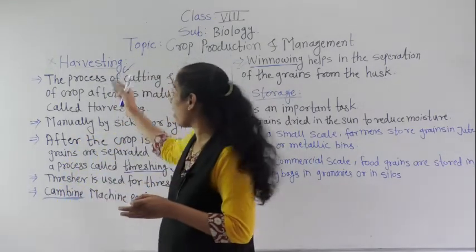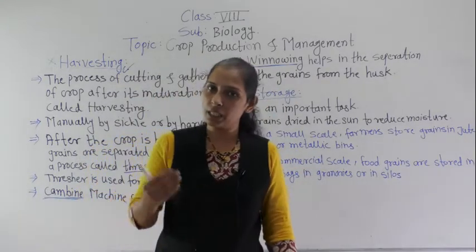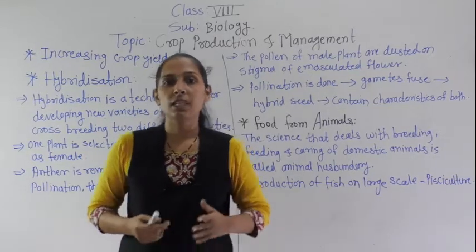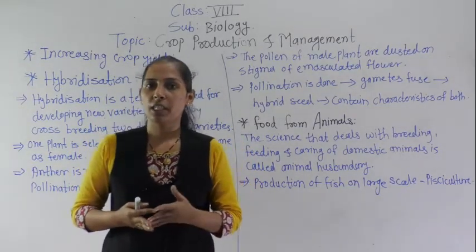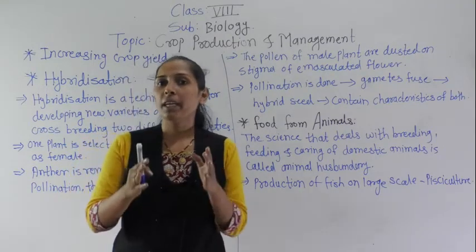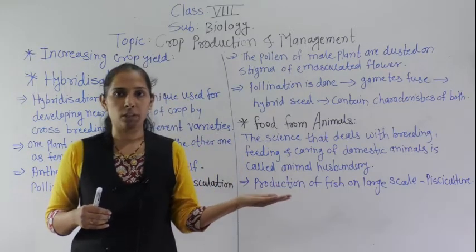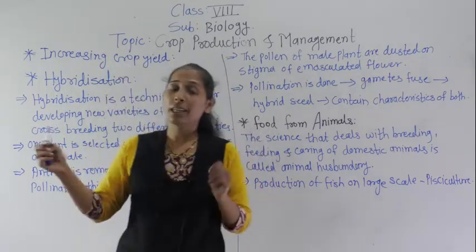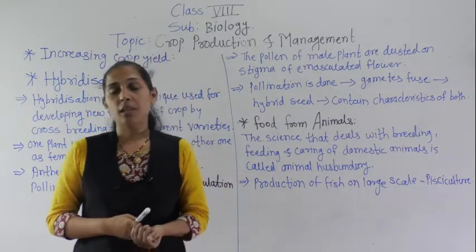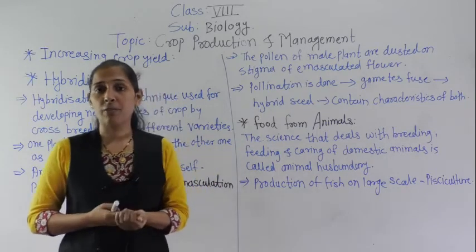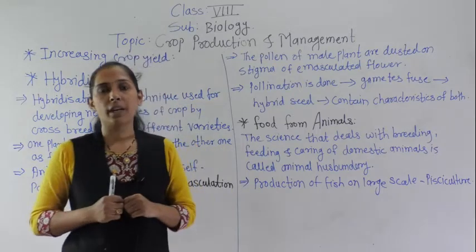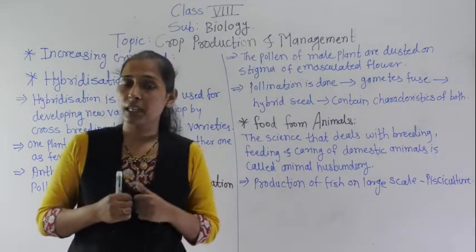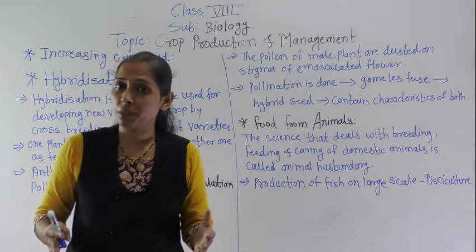Now we will move to the next point: increasing crop yield. India is a very vast country with an ever-increasing population, and it is very important to provide enough food for that population. To increase crop yield, farmers should use new and modern techniques during different agriculture practices, perform all practices at the right time and in proper sequence, and avoid over-irrigation or overuse of fertilizers and manures.